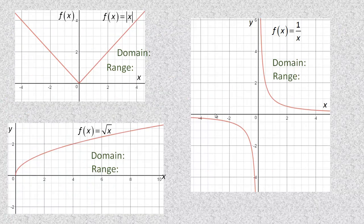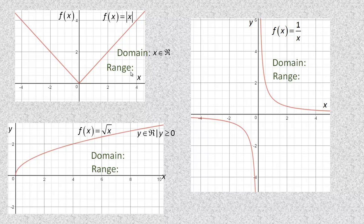Here are three more examples on the second page. This is called the absolute value function: f(x) = |x|. Absolute value means the distance to 0 — for example, |2| = 2, |3| = 3, and |-2| = 2 because it's still 2 units from the origin. The domain is all real numbers since there's no number you can't take the absolute value of. The range is all real numbers where y ≥ 0, since 0 is the lowest y value.